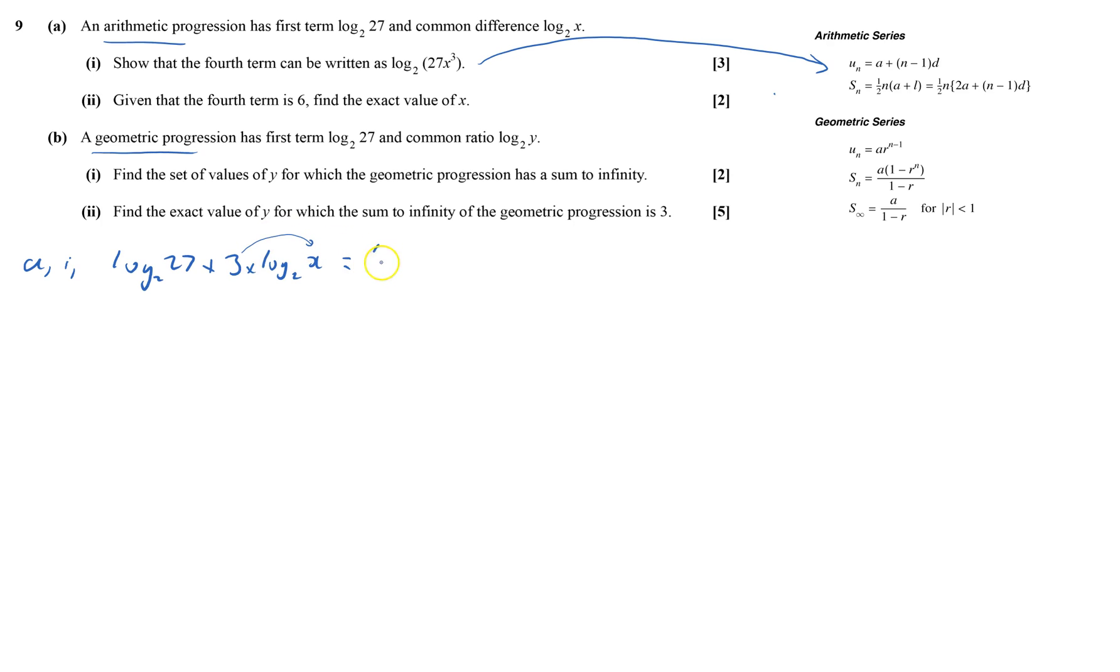So it's log of 27 plus log of x cubed. They're both log to base 2. And I got a log plus a log is the same as the log of the product, so that's log 2 of 27x cubed. And that's the first part done.